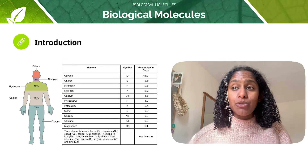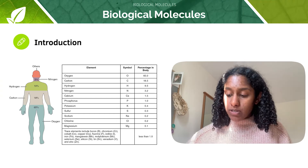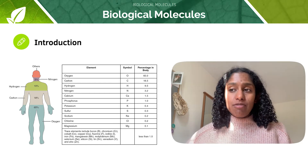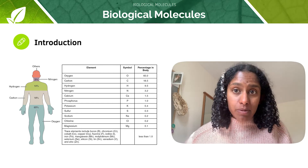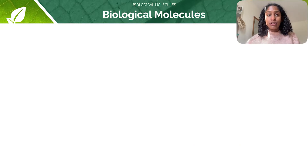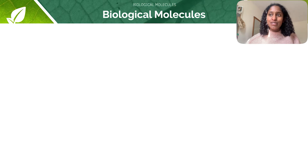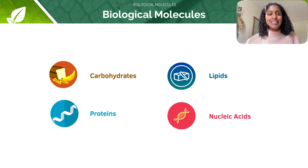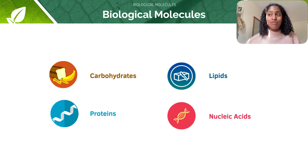Let's start by thinking about biological molecules themselves — they are the building blocks of biology. Most biological molecules are organic compounds made from carbon, but they consist of many elements: not only carbon, but oxygen, hydrogen, nitrogen, and many others. There are four major classes of biological molecules: carbohydrates, lipids, proteins, and nucleic acids. Those are the four I want you to remember for your A-levels.